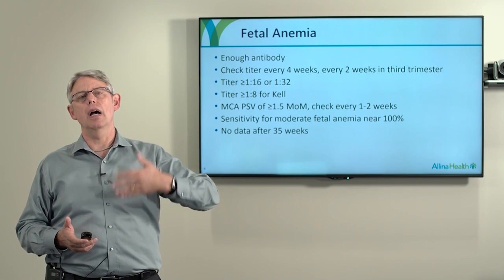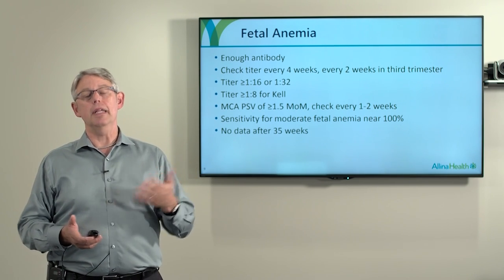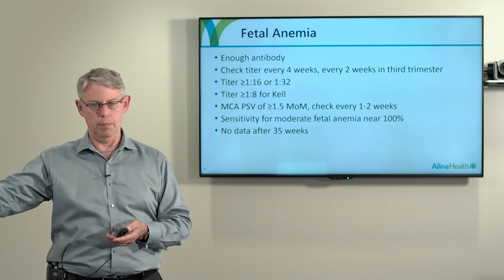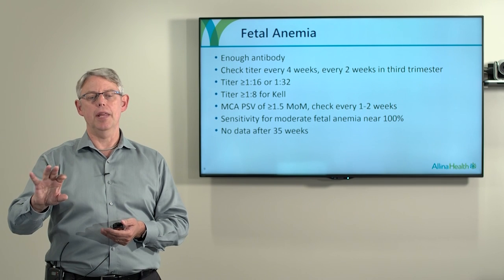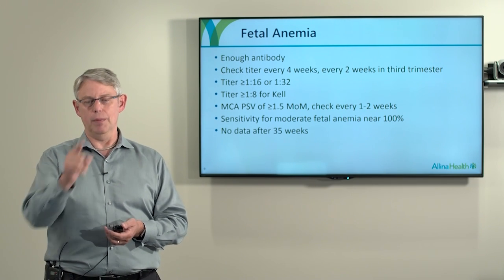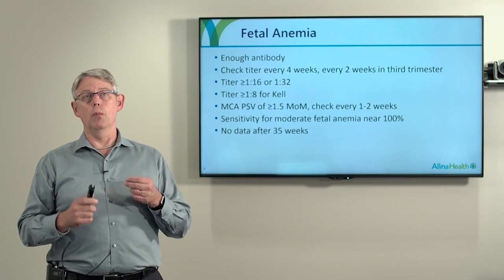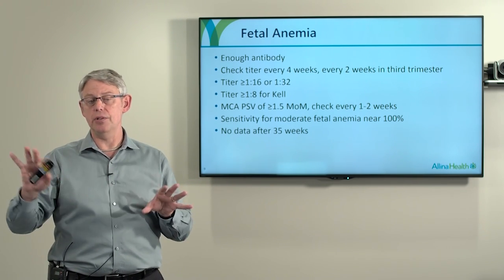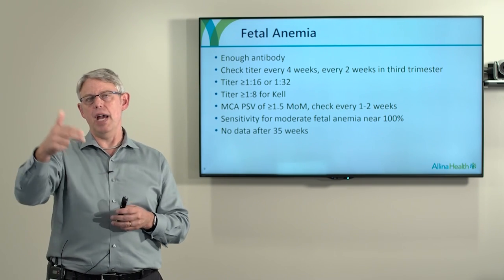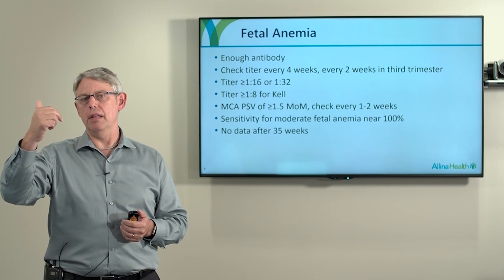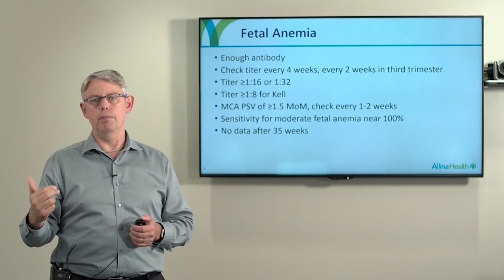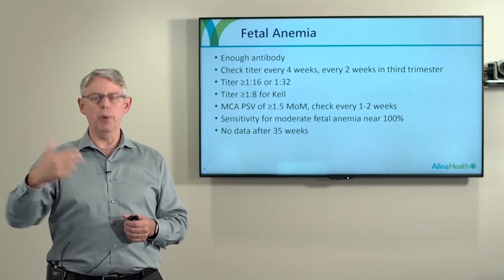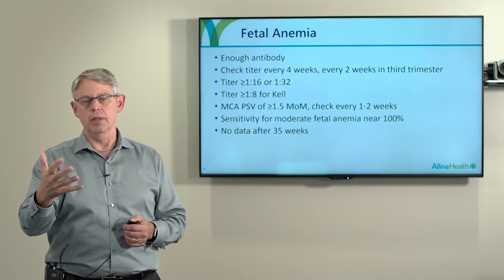If the titer crosses the threshold, in the old days we used to do amniocentesis to look at the amount of bilirubin in the amniotic fluid. But we don't need to do that anymore because there is a better non-invasive way of assessing this: looking at the middle cerebral artery peak systolic velocity, or MCA PSV. There is a nomogram for the normal range throughout pregnancy, and it's specific to gestational age. If it gets above 1.5 MOMs, that's a pretty good indication of significant fetal anemia. The positive predictive value is fairly high with very few false positives. We look at it every one to two weeks to see the trend, and it's a good predictor up to 35 weeks.